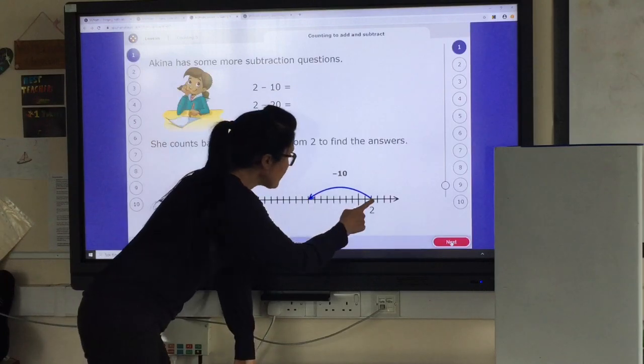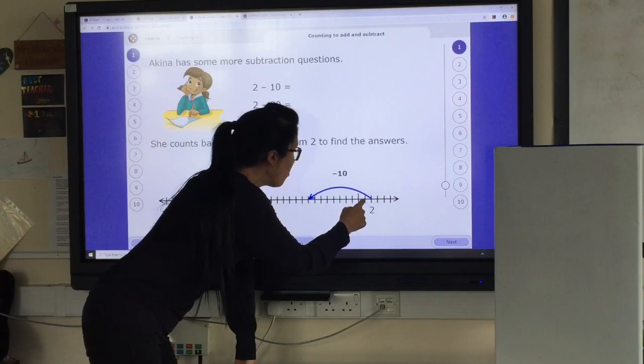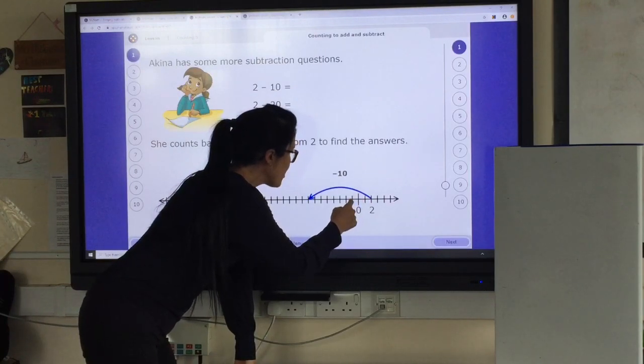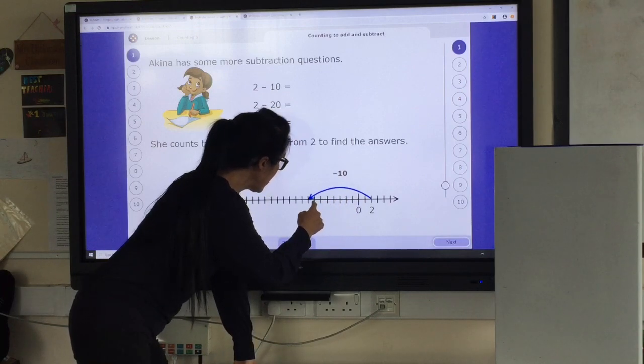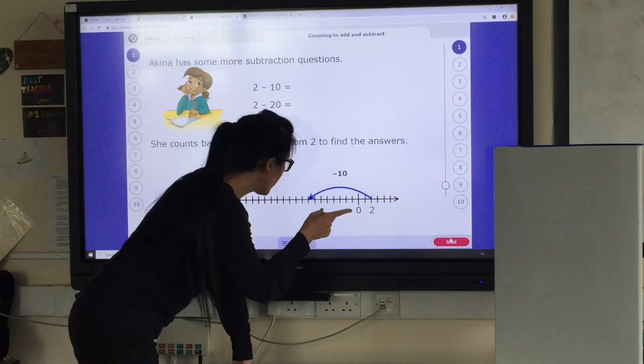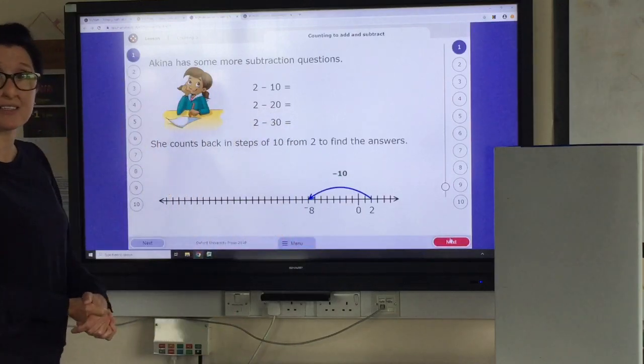So we start off at 2. 1, 0, minus 1, minus 2, minus 3, minus 4, minus 5, minus 6, minus 7, minus 8. So if we click next, we've landed on minus 8.